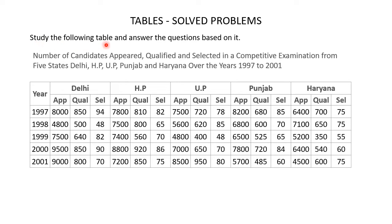Study the following table and answer the questions based on it. This is a table which gives us the number of candidates appeared, qualified and selected in a competitive examination from 5 states: Delhi, Himachal Pradesh, Uttar Pradesh, Punjab and Haryana over the years 1997 to 2001. Each row is dedicated for the years from 1997 to 2001 — 1997, 1998, 1999, 2000 and 2001.